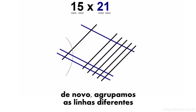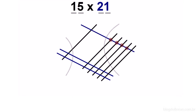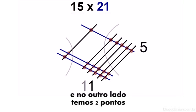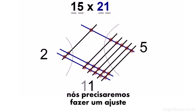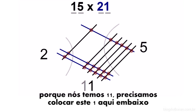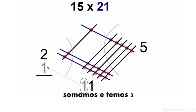We will again group the different lines. Here we have five dots. In the middle, we have 11 dots. And the other end, we have two dots. We'll need to make one adjustment. Because we have 11, we'll need to carry this one over, which will make three. And our answer is 315.